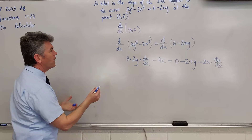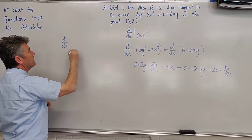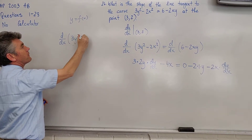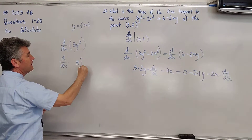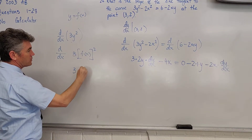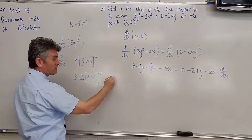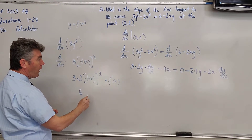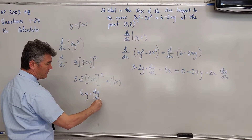A lot of people have trouble taking the derivative with respect to x of y squared. If you realize that y is equal to f of x, it might be easier to take the derivative of 3y squared. Rewriting it as the derivative with respect to x of 3 times f(x) squared, you get 3 times 2 times f(x) to the first, then by the chain rule, times f prime of x — which gives 6y times dy/dx.